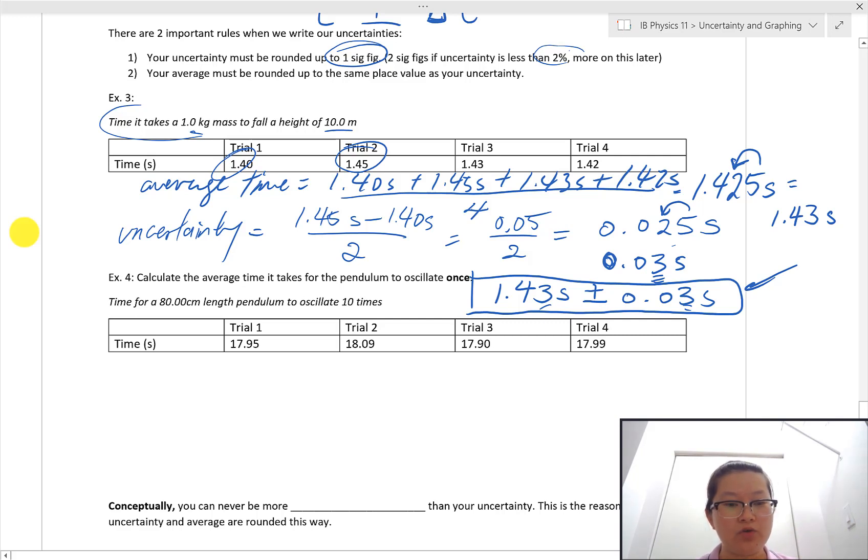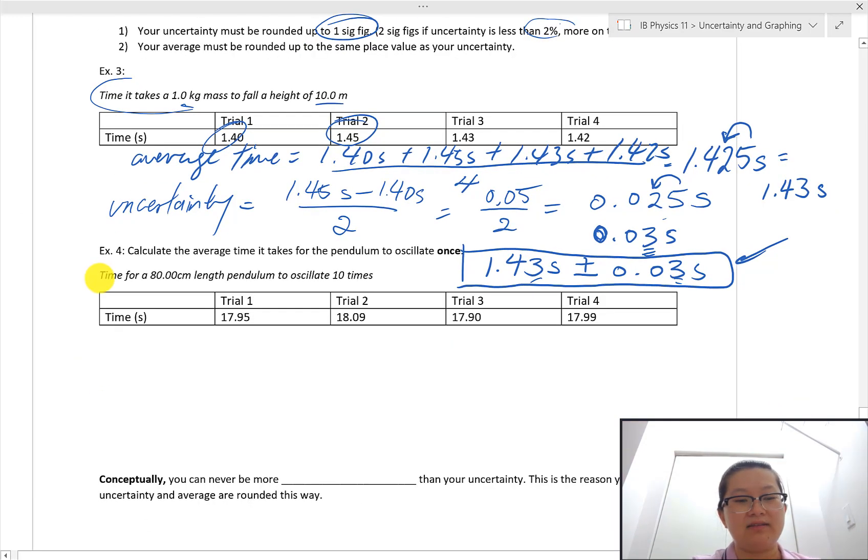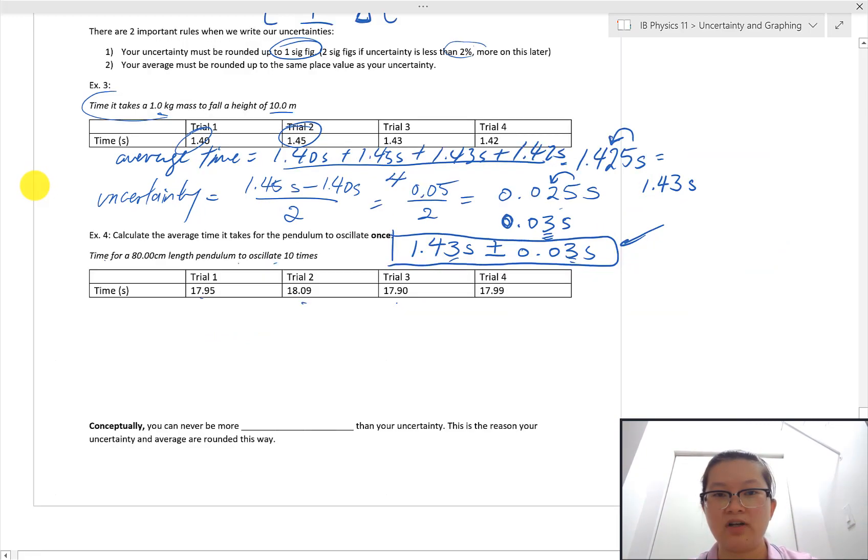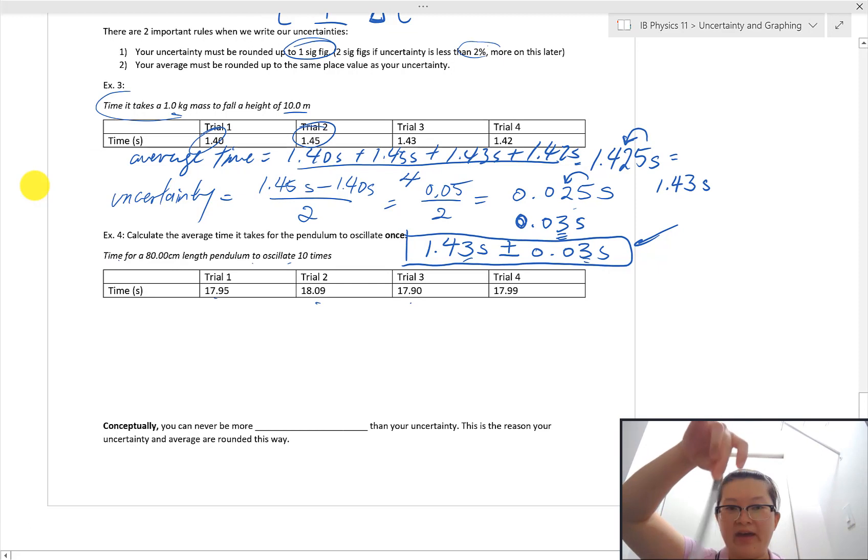So that's pretty much what that looks like for doing the average and the uncertainty. Right now, maybe it's a good idea for you to give the next one a try. So the next one, calculate the average time it takes for a pendulum to oscillate once. So the experiment is, this is the time it takes an 80 centimeter length pendulum to oscillate 10 times. This is the time data in seconds. So what that means is, imagine if you can see me, I got a pendulum, I can use my pen for example. So then this is, I see this oscillating and I'm going to time it for 10 oscillations. So one, two, three, four, five, six, seven, eight, nine, 10. So that time I record is 17.95 seconds. And I do that for four trials and record my data.